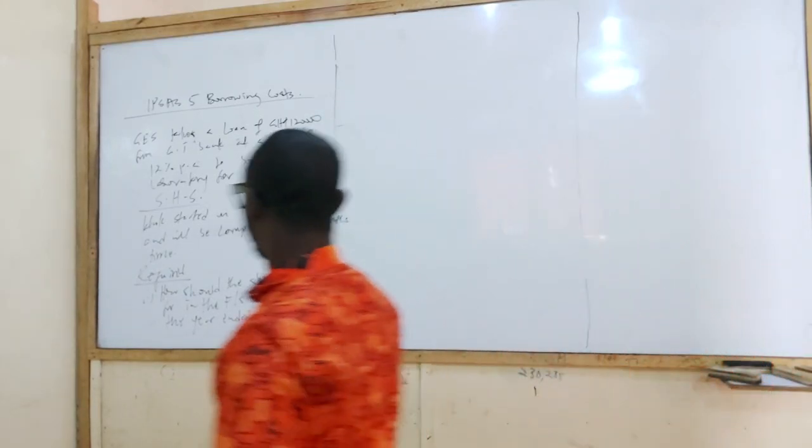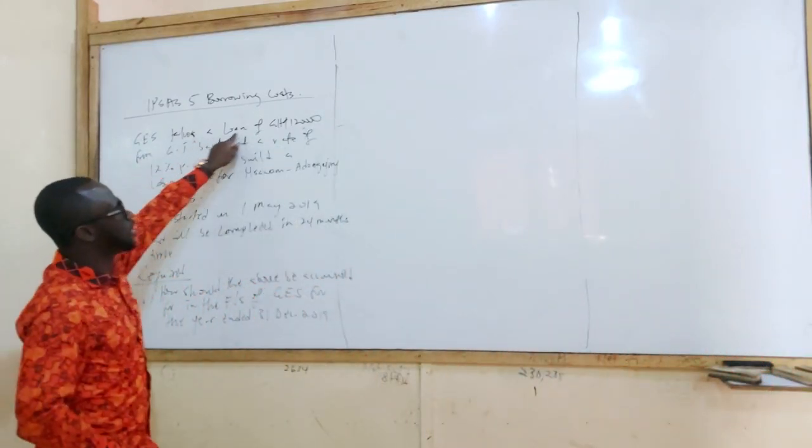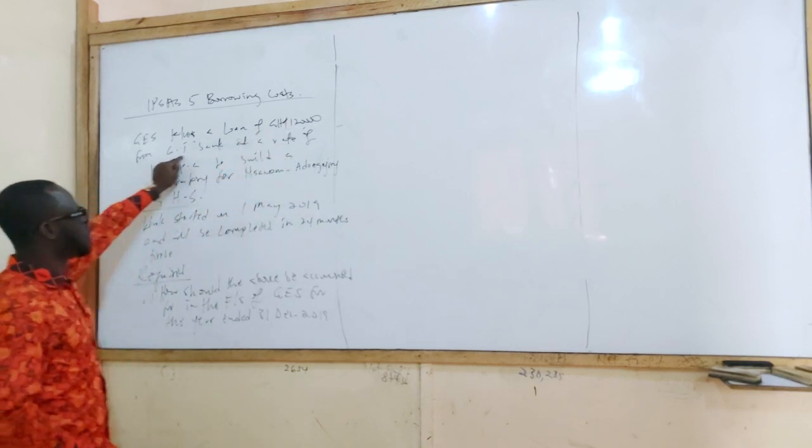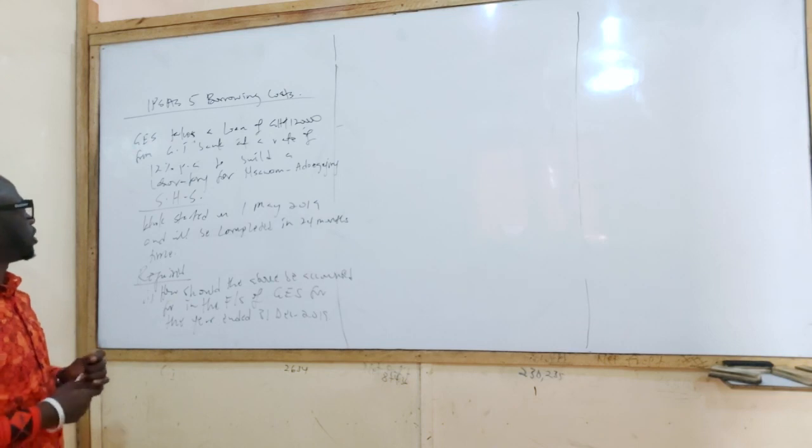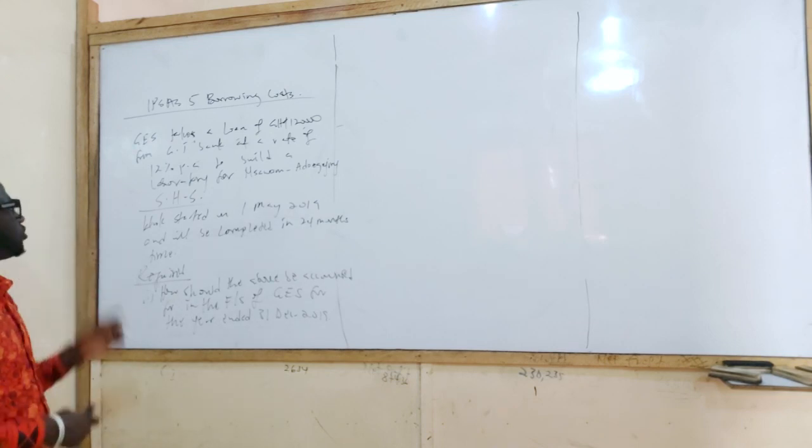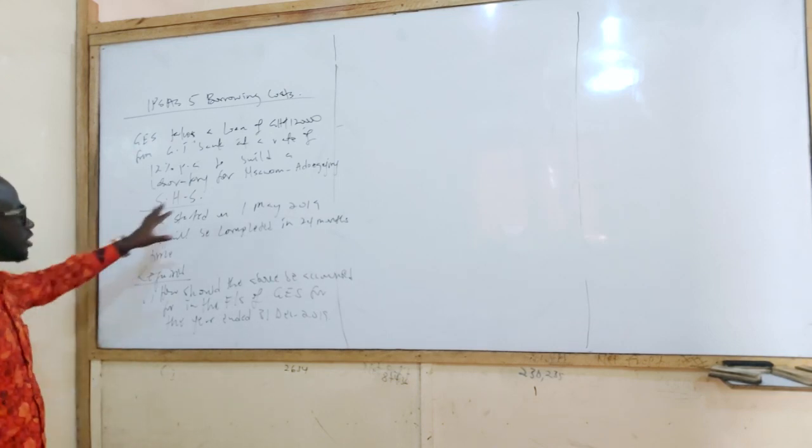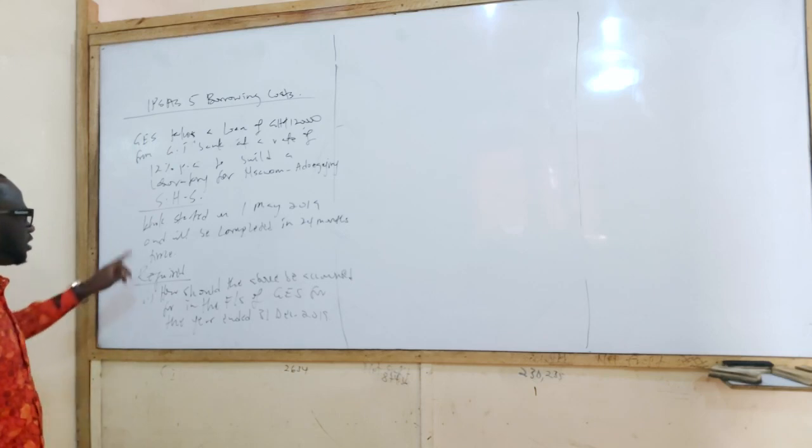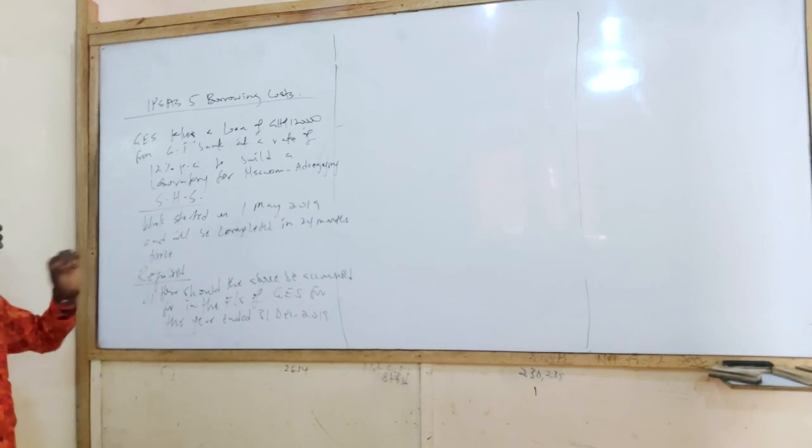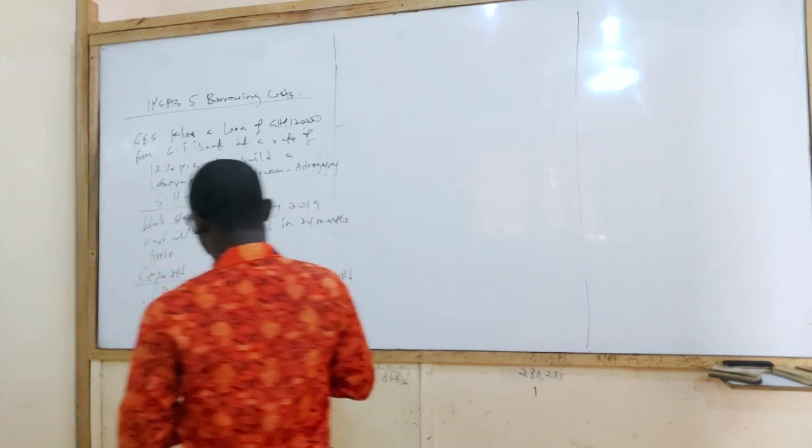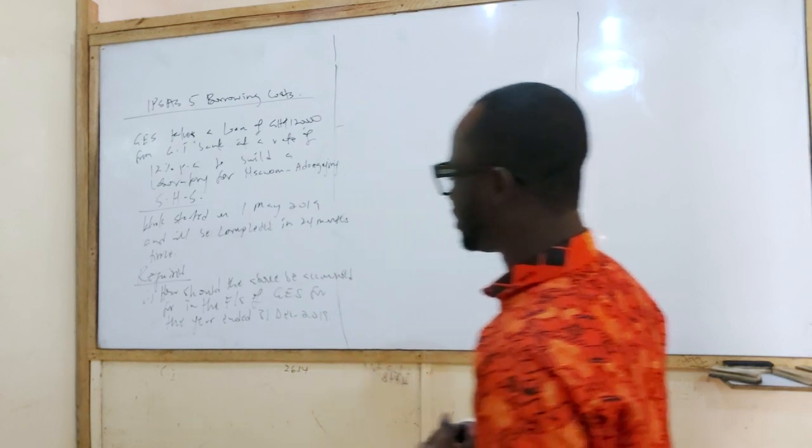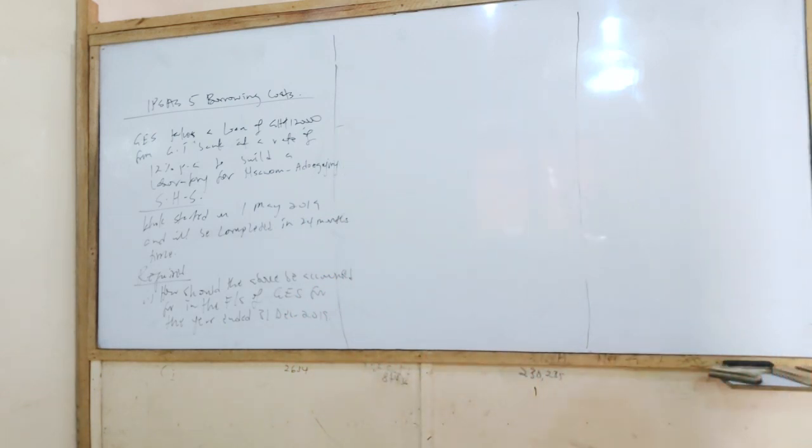So let me just read through the question again. Ghana Education Service takes a loan of 120,000 Ghana cedis from GT Bank at a rate of 12% per annum to build a laboratory for a Senior High School. Work started on 1st May 2019 and will be completed in 24 months time. How should the above be accounted for in the financial statement of Ghana Education Service for the year ended 31st December 2019?